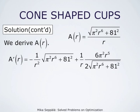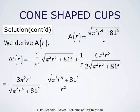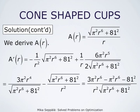Some cancellation happens: 6 divided by 2 is 3. So A prime of r is 3 times pi squared r to the fourth divided by square root of pi squared r to the sixth plus 81 squared, minus square root of pi squared r to the sixth plus 81 squared divided by r squared. Combining these two fractional expressions, the derivative becomes 3 times pi squared r to the sixth minus pi squared r to the sixth minus 81 squared, all divided by r squared times square root of pi squared r to the sixth plus 81 squared.